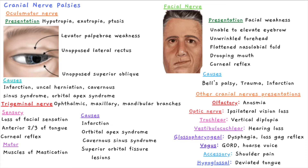To end, let's look at some other cranial nerve presentations. The olfactory nerve is responsible for smell, so a lesion causes anosmia. The optic nerve supplies the ipsilateral eye, so a lesion causes ipsilateral vision loss. The trochlear nerve controls the superior oblique — a lesion leads to vertical diplopia, as the eye cannot move in that direction, leading to inability to align gaze and resulting in diplopia.